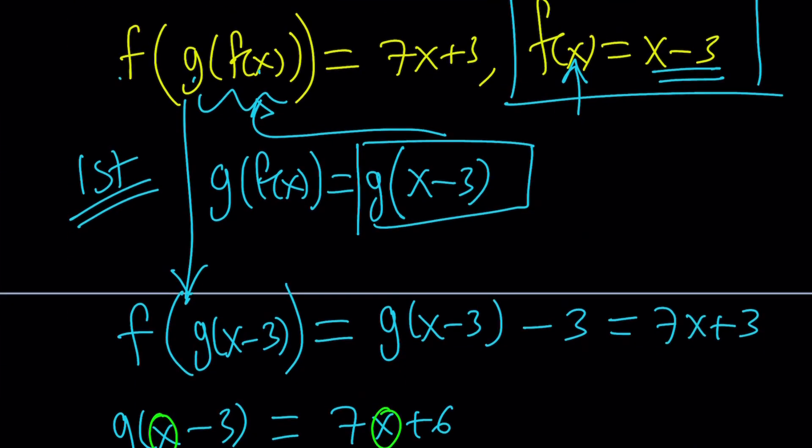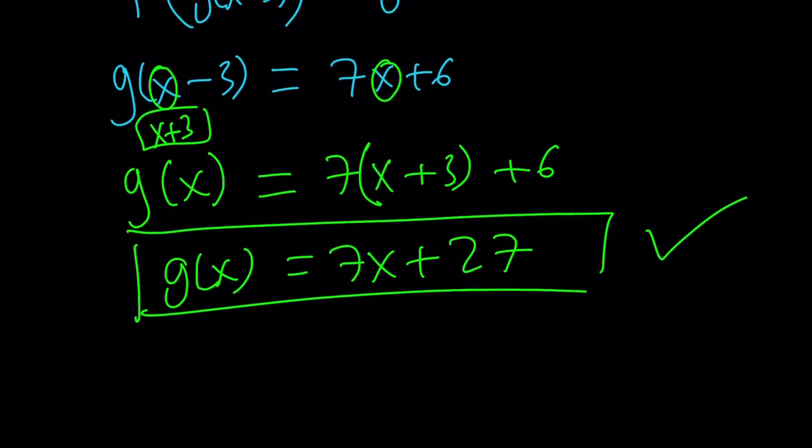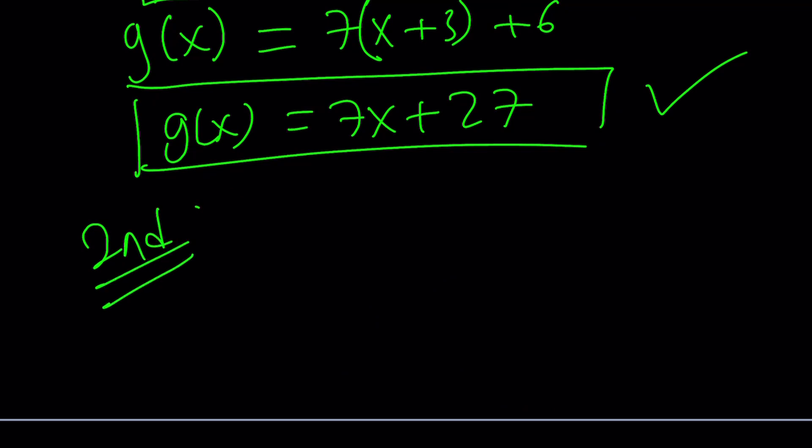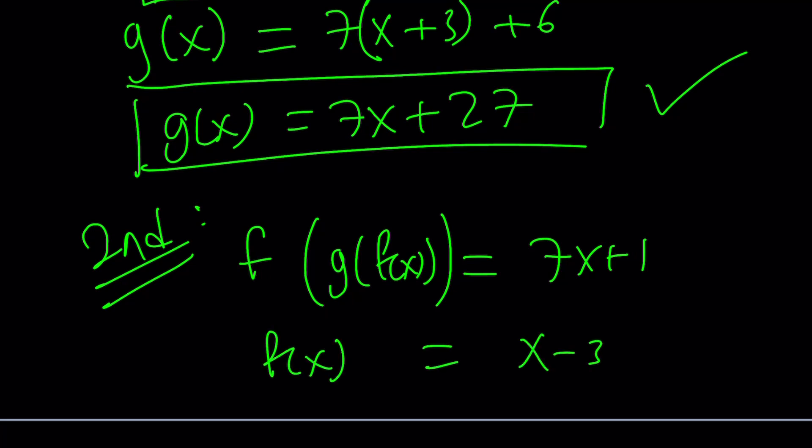Does that make sense? Let's review that real quick. So we have f of g of f of x. Now what we do is we evaluate this first, and we find this, and then we plug it in here, and we get the answer. Make sense? I hope it does. Let's go ahead and talk about the second method. Our second method is going to be slightly, just a tiny bit different. I don't know if it can even be called the second method, but anyways, I just wanted to show you these two different approaches. f of g of f of x is given, and we have f of x equals x minus 3. Great.